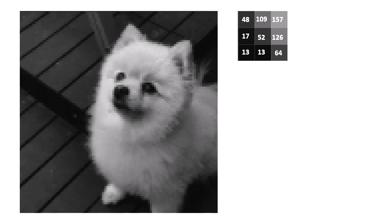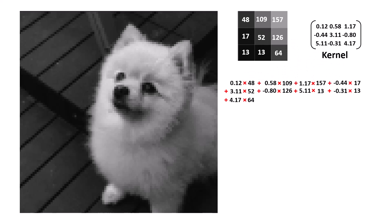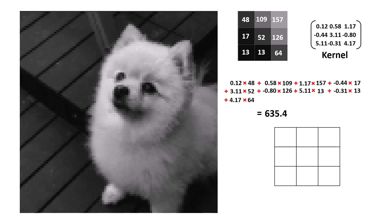Assuming you already know how convolutional neural networks work: when we have an input image, we select a portion of it, like this 3x3 area, where each pixel is represented by a value between 0 and 255. We also have a kernel whose values are updated by backpropagation. We multiply each kernel value by the corresponding pixel value, sum them all up, and get a result. The key question is where to store this result in the output feature map — the answer is we store it at the center.